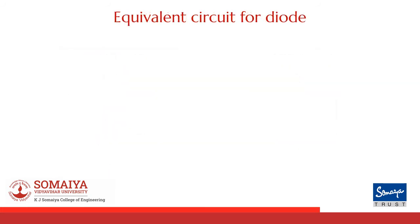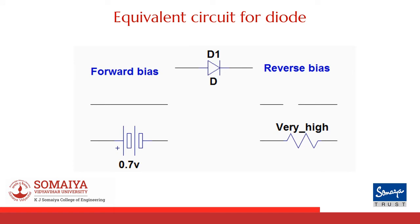Let's look into the equivalent circuit for the diode when it is forward biased or reverse biased. When the diode is forward biased, in ideal condition we consider it to be a short circuit, but we are aware that there is a drop across the diode — approximately 0.7 volts for a silicon diode. When the diode is reverse biased, it acts as an open circuit, or more precisely, it is offering a very high resistance.